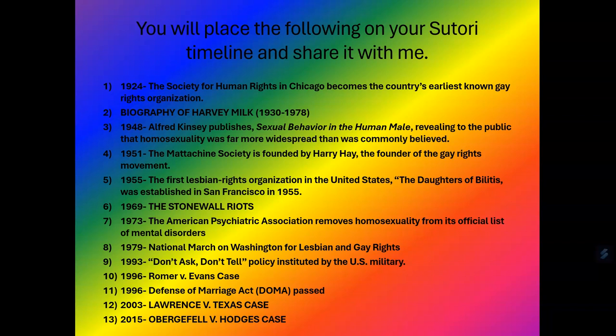1969 is probably the most important item on here: the Stonewall riots. There's a pretty high likelihood that appears on the AP exam — I see it quite often in AP guides. Number seven, 1973: the American Psychiatric Association removes homosexuality from its official list of mental disorders. 1979: the National March on Washington for Lesbian and Gay Rights, where roughly 75,000 people showed up to exercise their First Amendment rights in protest. 1993: the Don't Ask, Don't Tell policy is instituted by the U.S. military — very controversial when it came out. 1996 has two items: the Romer v. Evans case, and also DOMA, the Defense of Marriage Act, was passed.